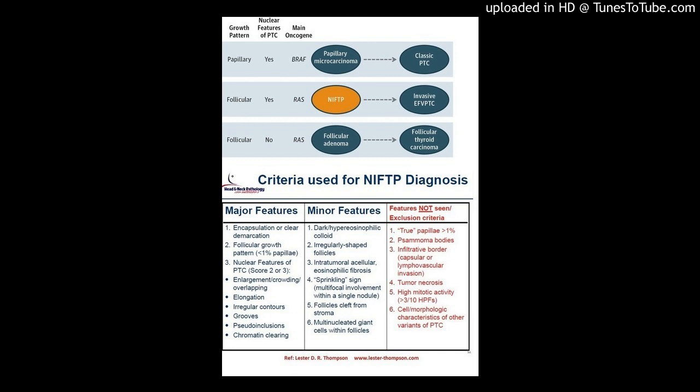Additional exclusion criteria: cell morphological characteristics of any other papillary thyroid carcinoma variant — for example, tall cell, columnar cell, cribriform morular, diffuse sclerosing, etc. — or oncocytic lesion. Reference: JAMA Oncology 2016; 2:1023.